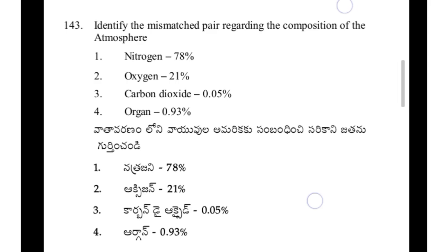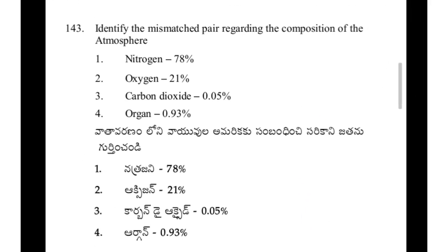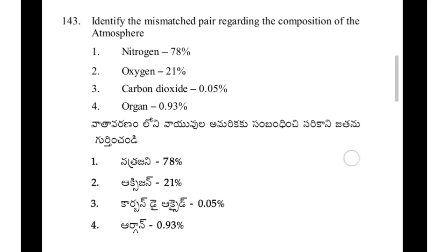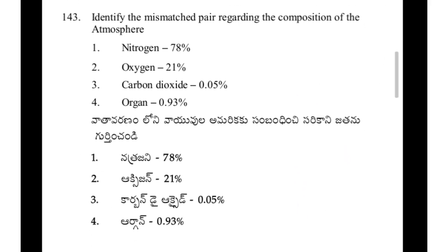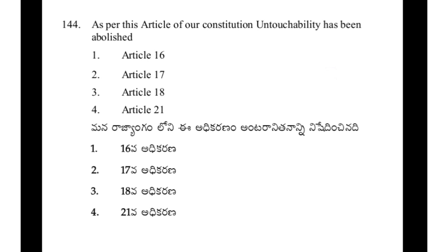Identify the mismatch pair regarding the composition of the atmosphere — option 3: carbon dioxide 0.05 percent. As per this article of our constitution, untouchability has been abolished — answer option 2, Article 17.